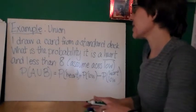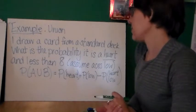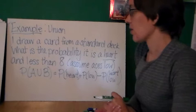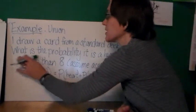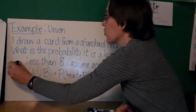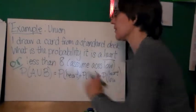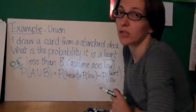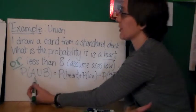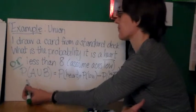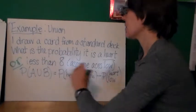So we're going to look at the probability of a union of events on our next slide. I draw a card from a standard deck. What is the probability that the card is a heart? I'm going to change this from AND to OR less than 8. We're going to assume that ACEs are low.